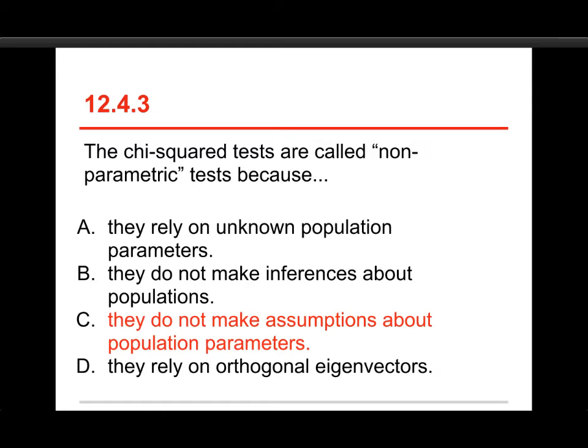The answer is C, they do not make assumptions about population parameters. I should say, rely on unknown population parameters, you can hypothesize about those for tests, but you don't usually rely on them. B, it's an inferential test, you're trying to get from the sample to the population. That's true of all the inferential tests we've looked at, including chi-squared.